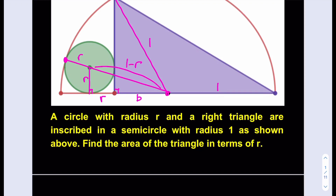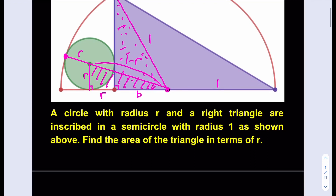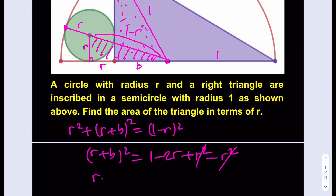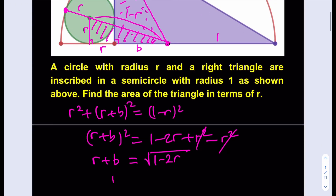Now I can use the Pythagorean theorem and write two equations. For the smaller triangle, we have r squared plus (r plus b) squared equal to (1 minus r) squared. Isolating (r plus b) squared gives us 1 minus 2r plus r squared minus r squared — the r squared terms cancel out. Since 2r is less than 1, we can take the square root of both sides: r plus b equals the square root of 1 minus 2r. So b in terms of r is the square root of 1 minus 2r minus r.